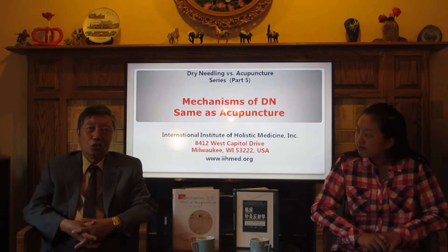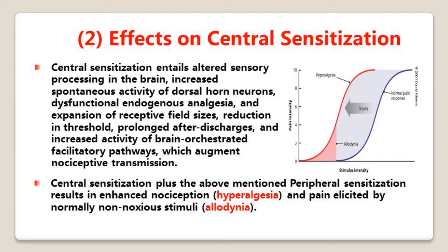Central sensitization entails altered sensory processing in the brain, increased spontaneous activity of dorsal horn neurons, dysfunctional endogenous analgesia and expansion of receptive field size, reduction in thresholds, prolonged after-discharges, and increased activity of brain-orchestrated facilitated pathways, which augment nociceptive transmission. Central sensitization, plus the above-mentioned peripheral sensitization, results in enhanced nociceptive hyperalgesia and pain elicited by normally non-noxious stimuli.